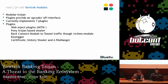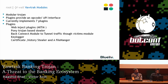Vawtrak comes as a single binary, with plugins later downloaded from the command and control server. It is a modular Trojan where each plugin provides an API interface to expose its functionality. Currently it implements around seven plugins. The most commonly used are the webinject plugin, the stealer plugin, BackConnect, Keylogger, FileManager, and a stealer.